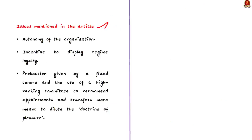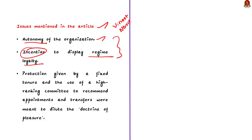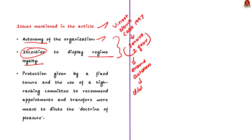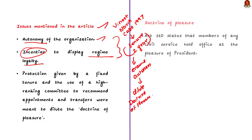The main issue is that the recent ordinances extending the tenure will compromise the autonomy of the organization. The prospect of getting an extension will become an incentive to display regime loyalty in the discharge of duties. The Supreme Court laid down in the Vineet Narayan vs. Union of India case 1997 that the directors of CBI and Enforcement Directorate should have a minimum tenure of two years. The protection given by a fixed tenure and a high-ranking committee to recommend appointments and transfers were meant to dilute the doctrine of pleasure implicit in civil service. However, this protection may be breached if the extension allowed through the ordinances becomes a rule rather than an exception.